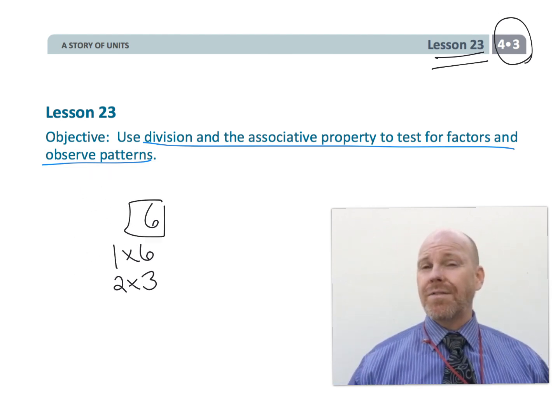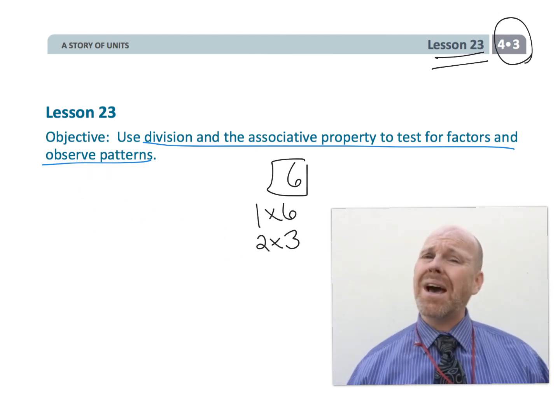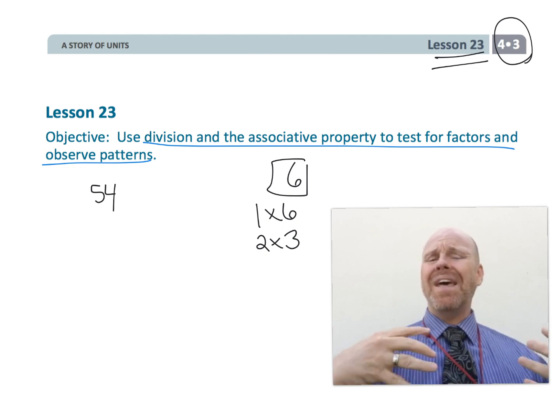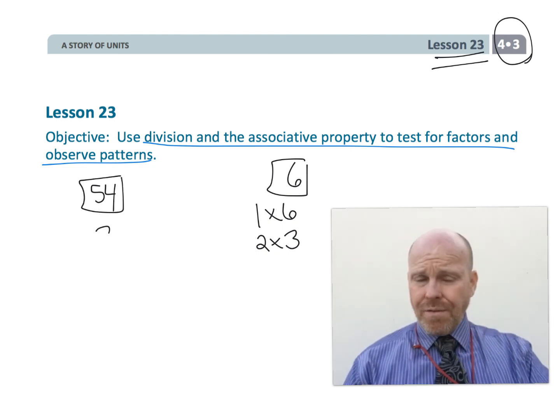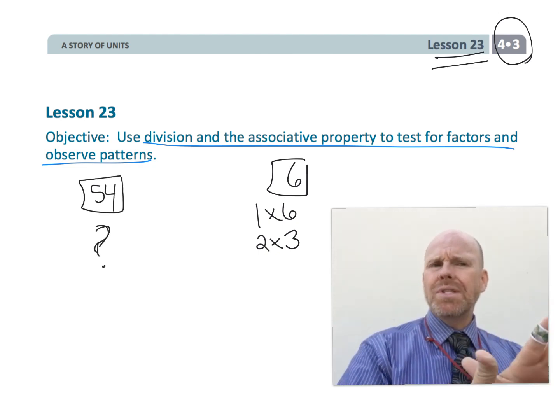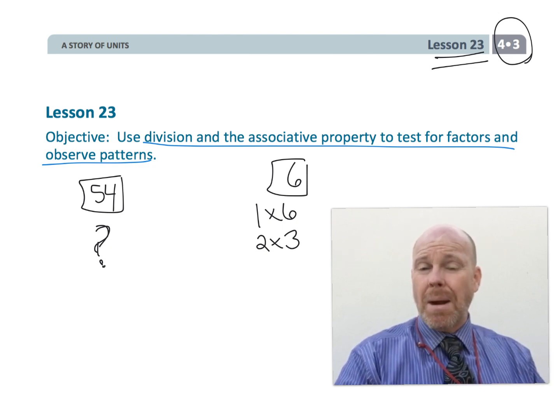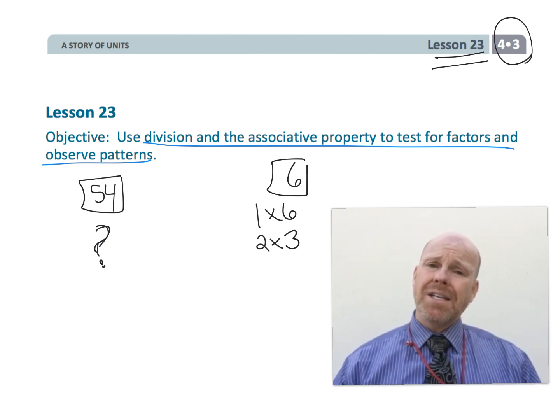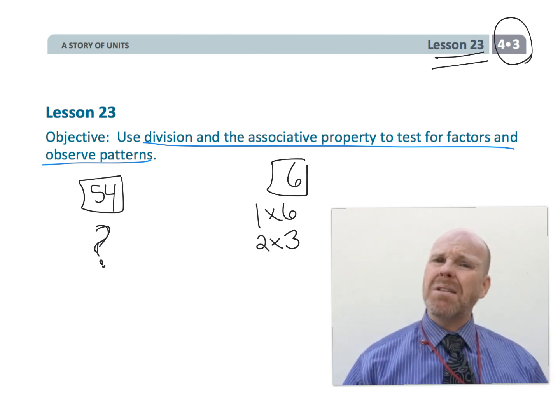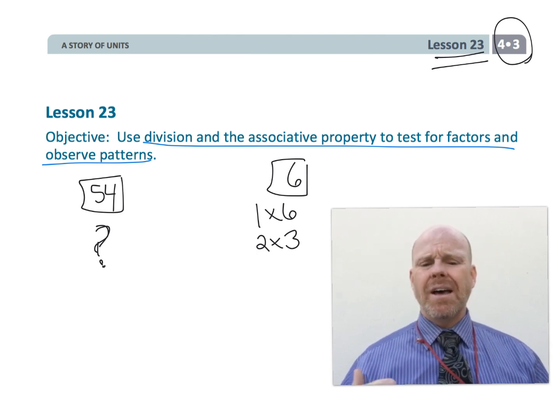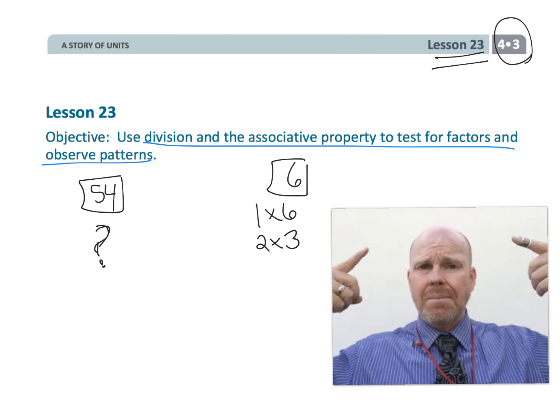But what if we were looking for the factors of 54? Well, now it gets a little bit trickier, and that's where we're going to use known factors and then use the associative property to allow us to find additional factors that might have been a little trickier to find if we were just trying to use our times tables in our head.